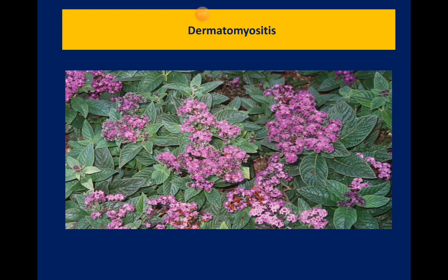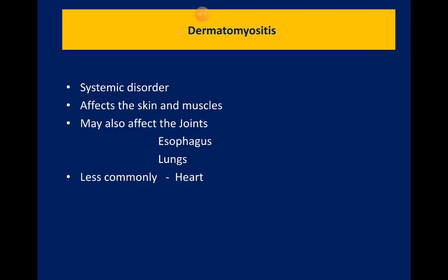Dermatomyositis shares most findings with polymyositis but additionally has skin involvement. The skin rash characteristically takes a heliotrope color. Always remember that despite their names, dermatomyositis and polymyositis can involve deeper organs such as the lungs and heart, and are therefore still systemic disorders.